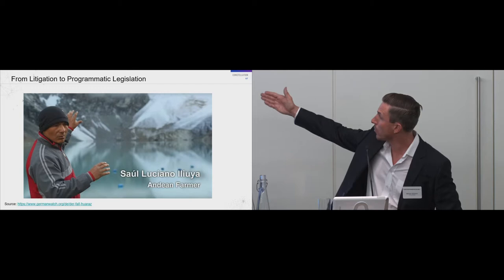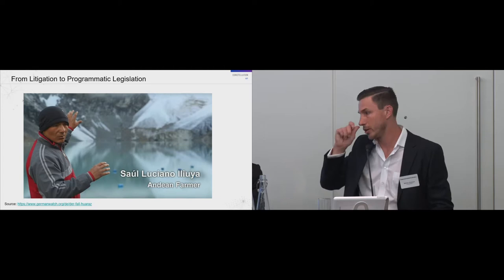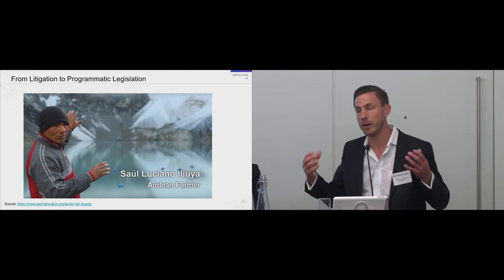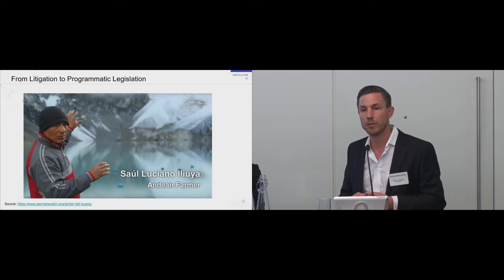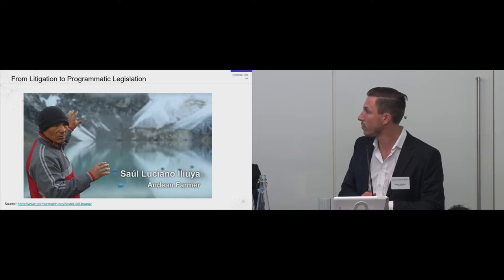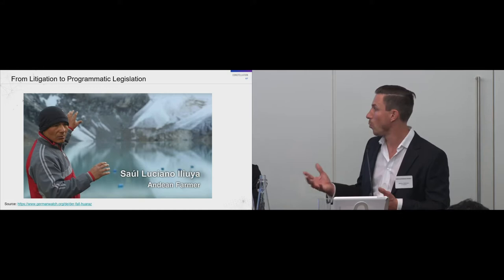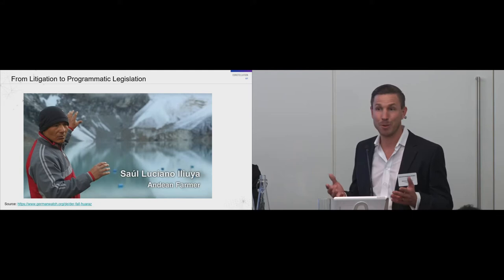That farmer lives high up in the Andes. They have a mountain lake over which a glacier is looming, and due to climate change that glacier is melting. Scientists have calculated that if the ice sheets of the vertical cliff of the mountain break off, there will be something like a small tsunami flooding the farmer's village. The farmer took action in combination with Germanwatch and sued RWE in a German court. After the claim was admitted it is now in a fact-finding period — and that brings me to blockchain and what we are developing right now.